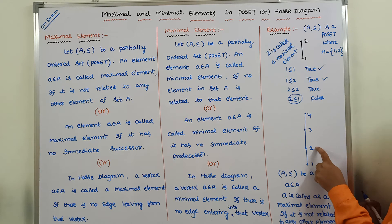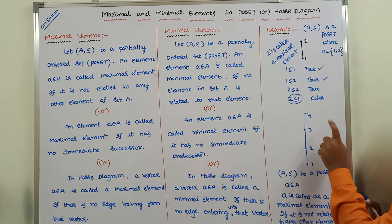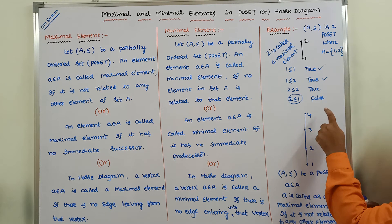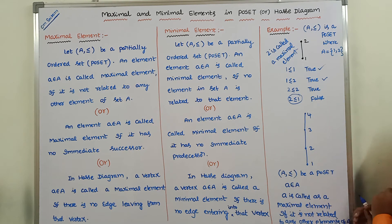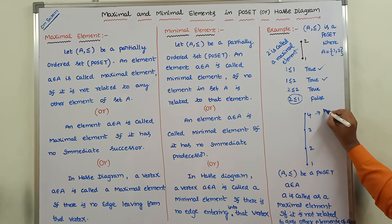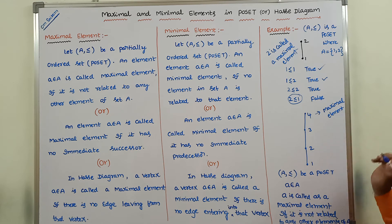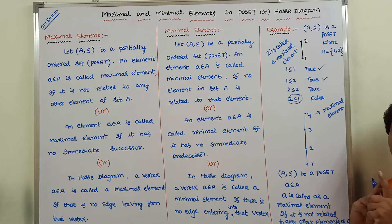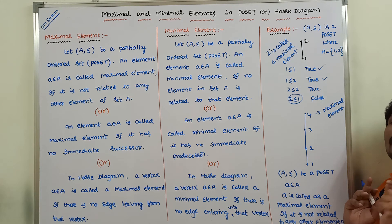In this Hasse diagram with elements 1, 2, 3, 4: 1 ≤ 2, 2 ≤ 3, and 3 ≤ 4. But element 4 is not related to any other element of set A — 4 is not related with 3, 2, or 1. Hence, element 4 is called a maximal element. So, an element belonging to set A is called a maximal element if it is not related to any other element of set A.